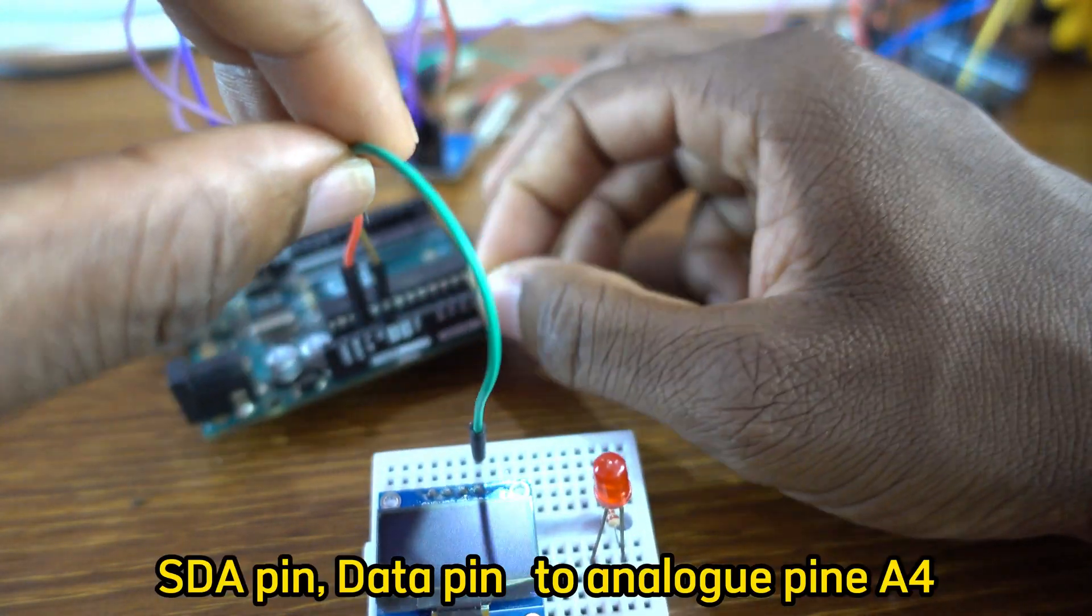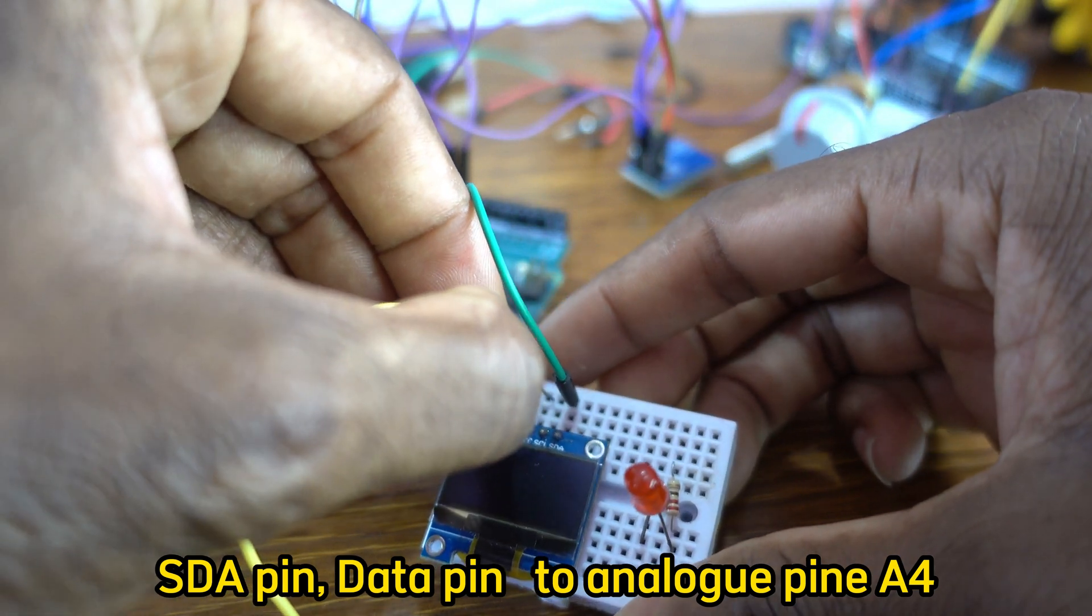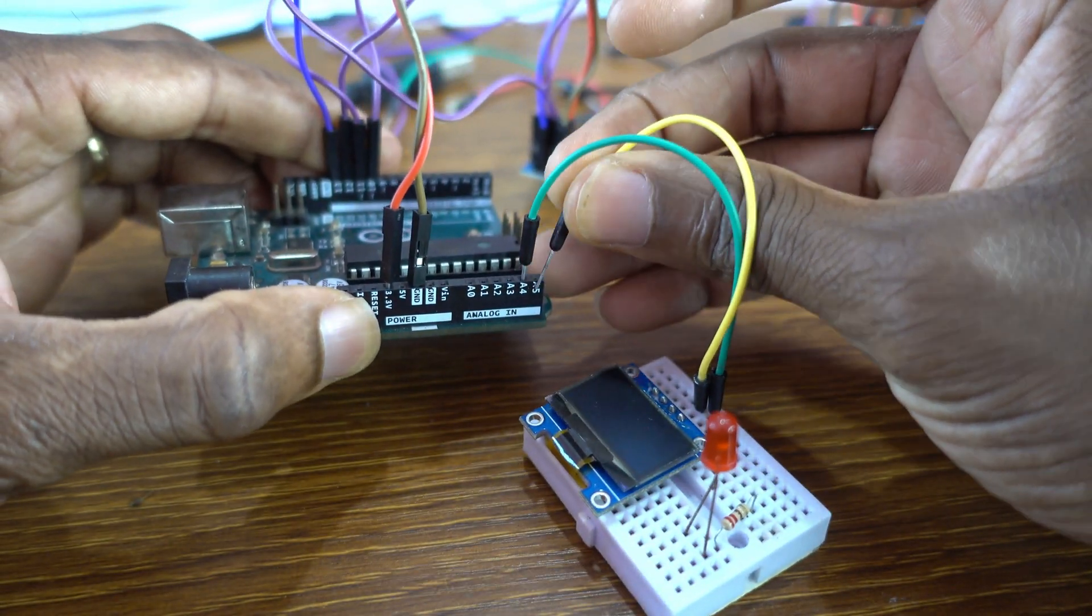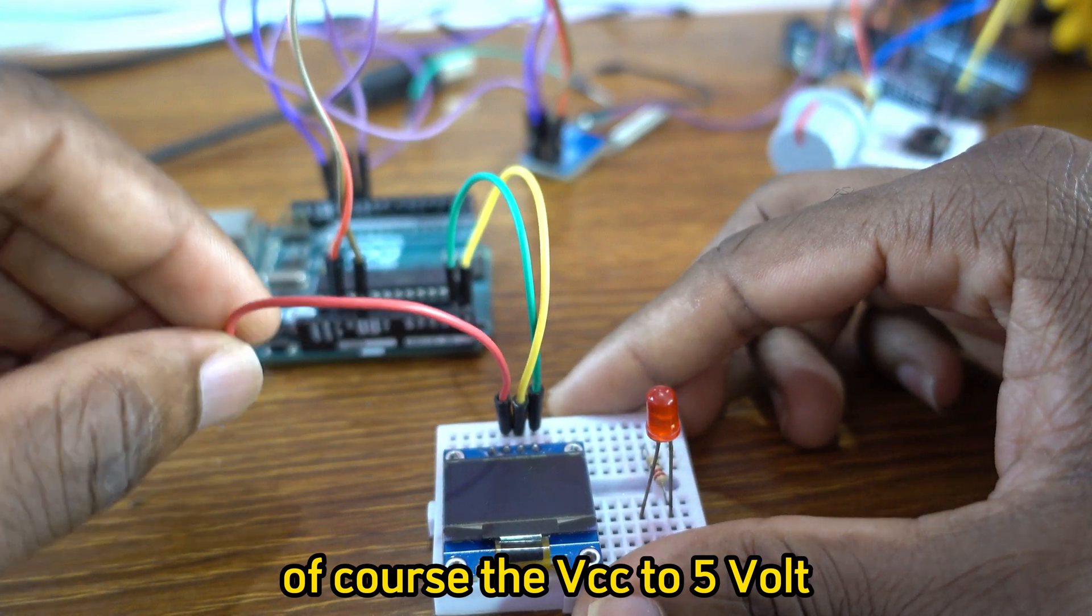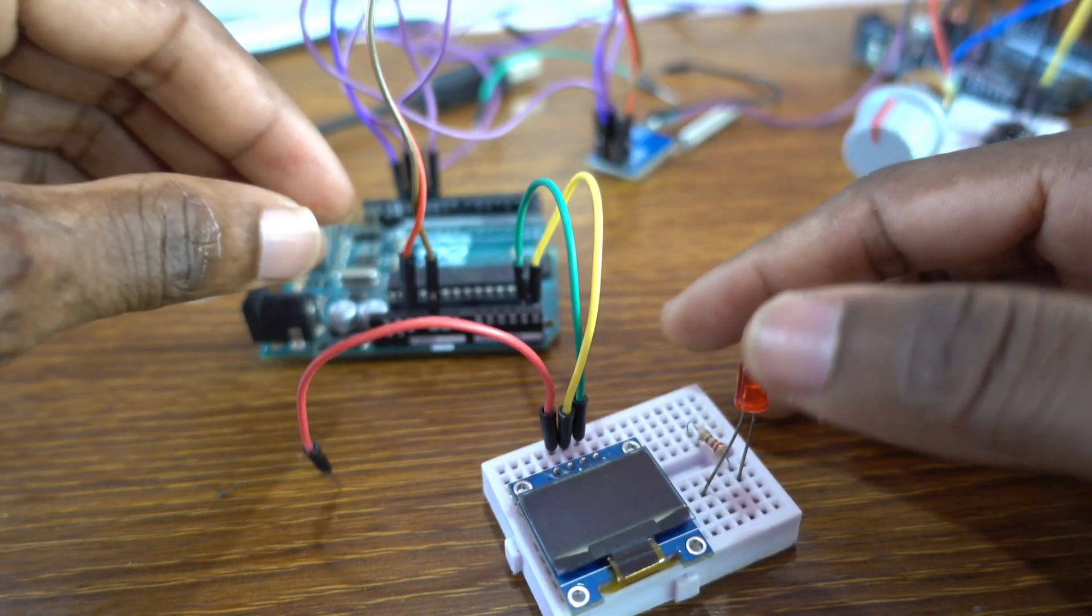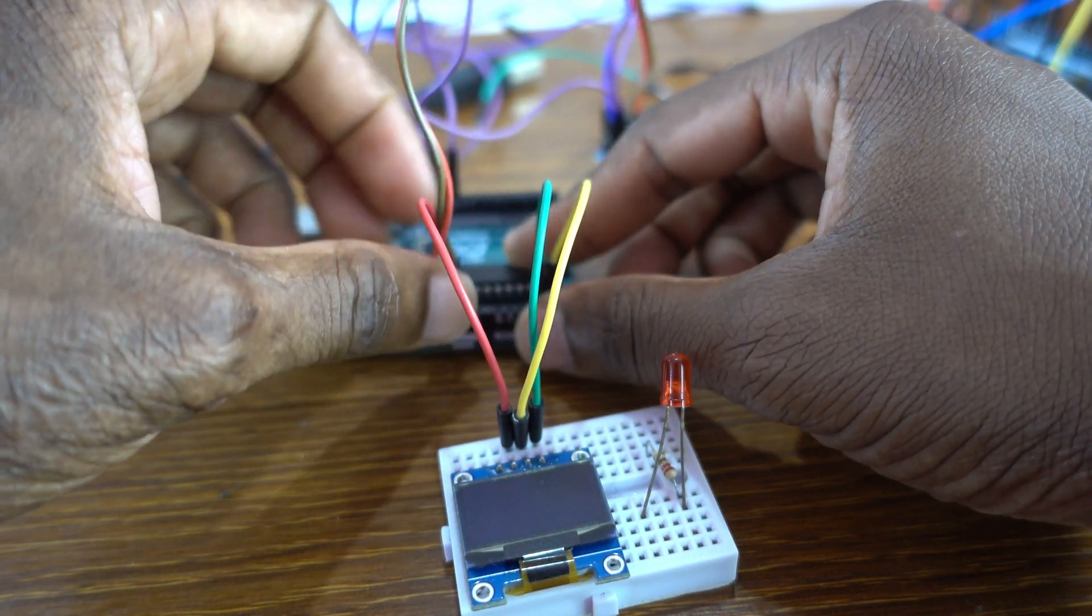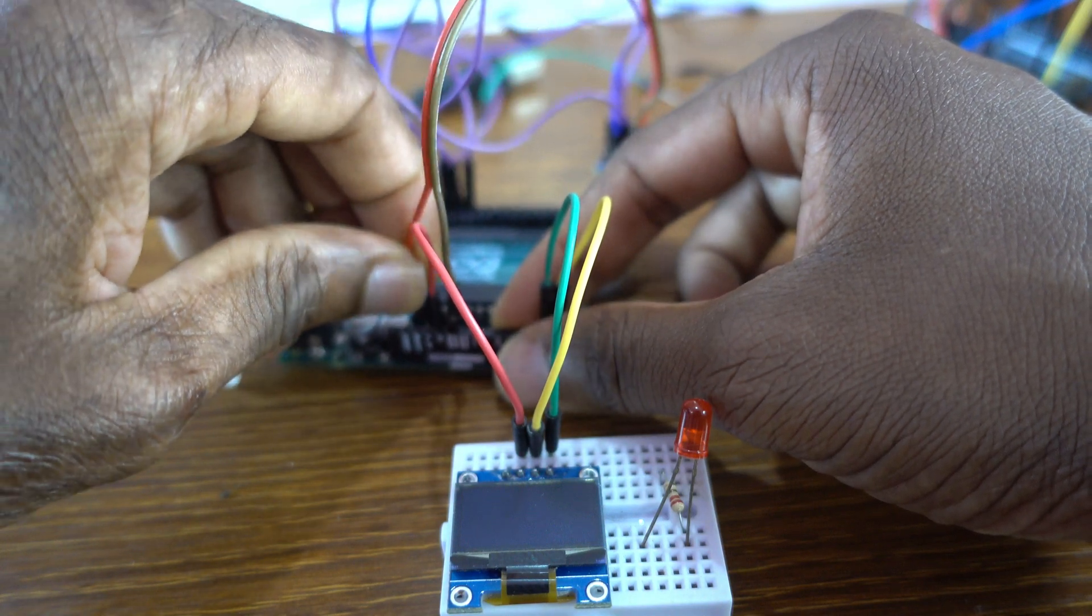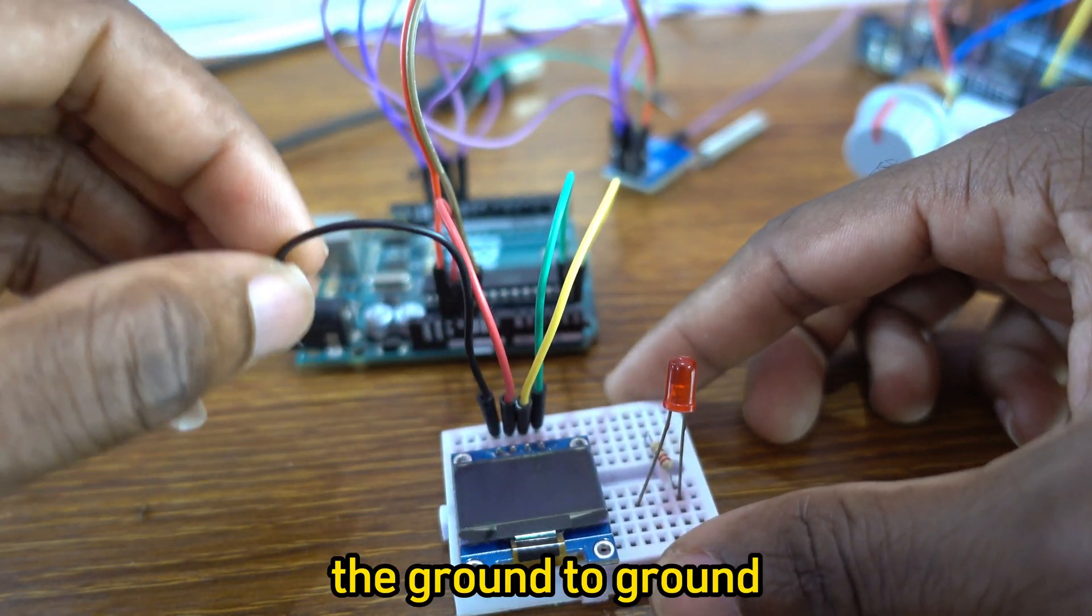SDA pin, the data pin, to analog pin A4. That's SCL, analog pin A5. And of course VCC to 5 volts. And now I need to connect the ground to ground.